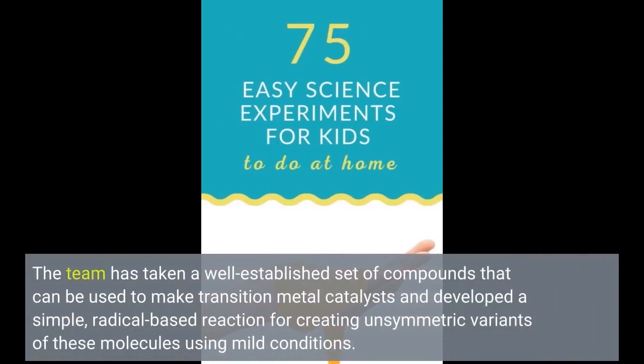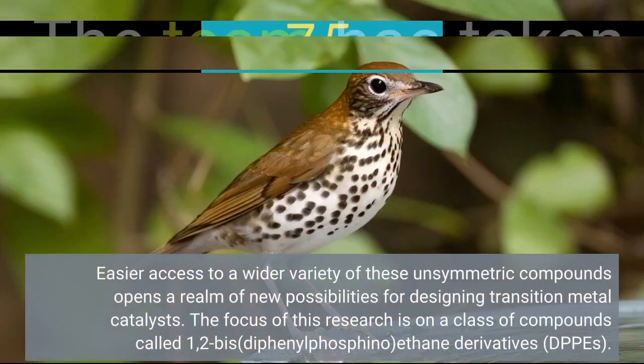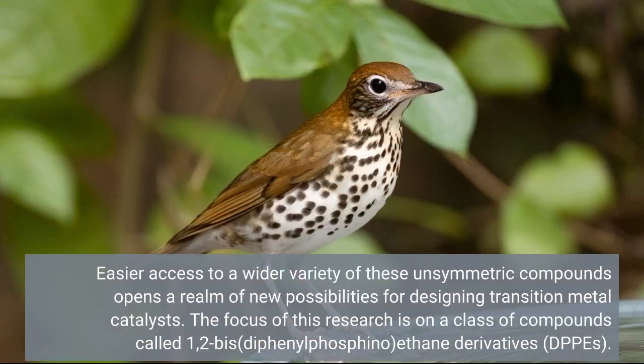The team has taken a well-established set of compounds that can be used to make transition metal catalysts and developed a simple, radical-based reaction for creating unsymmetric variants of these molecules using mild conditions. The focus of this research is on a class of compounds called 1,2-bis-diphenylphosphino-ethane derivatives, DPPEs.